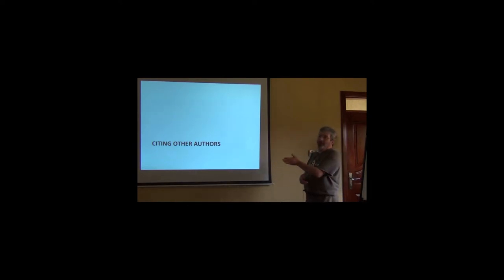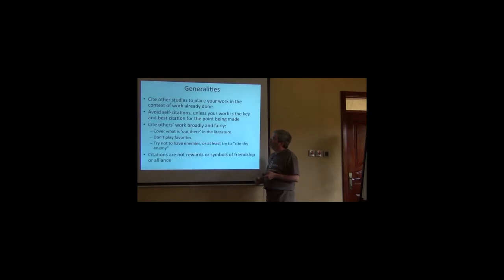And a century and a half of additional input by lots of scientists. So, when you publish your work, you should acknowledge all of the precursors and inputs. You don't have to go back to Linnaeus and cite Linnaeus 1789 for providing the taxonomic system that you're using. But you really should cite everything that is more immediately relevant to your work. So, the most important thing is to cite other studies, to place your work in the context of work already done.